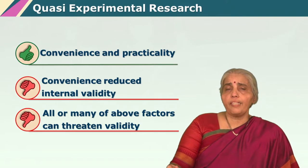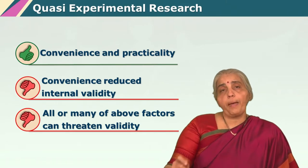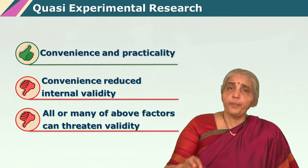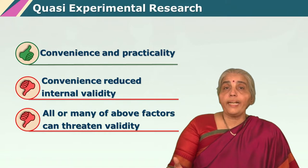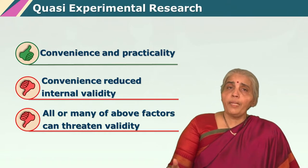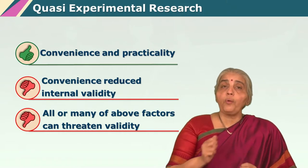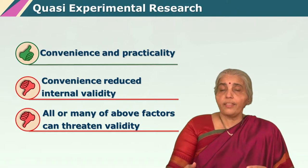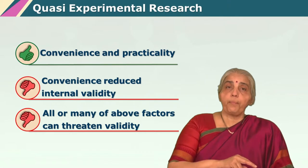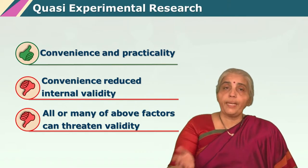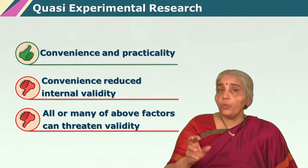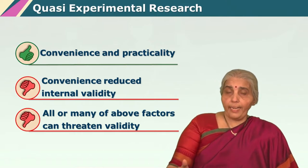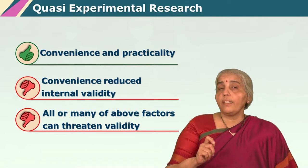Quasi-experimental designs follow the parameters of experimental design except for the randomization aspect. The experimenter has good control over most conditions but cannot claim subjects were completely randomized. Sometimes one can use a counterbalance design, where two groups are exposed to certain conditions and then swapped — group A goes to the position of group B and vice versa. Counterbalance designs can correct for many threats to internal validity, but they are not a true experimental design.